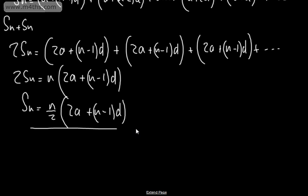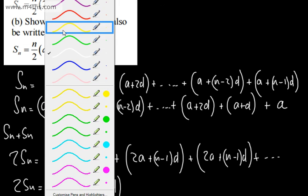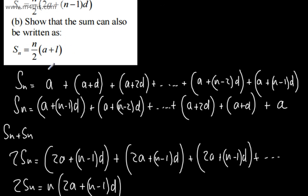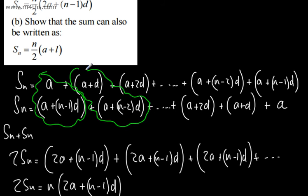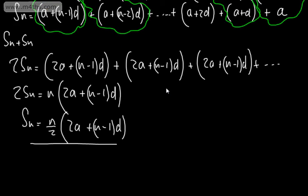So all I've done is written it out forwards, written it out backwards, and added them together. We're looking at the first term plus the last, and so on, finding a partner for each term, and we end up with n lots when summing n terms.